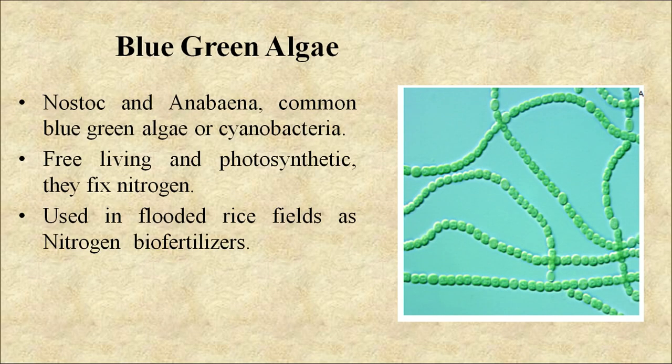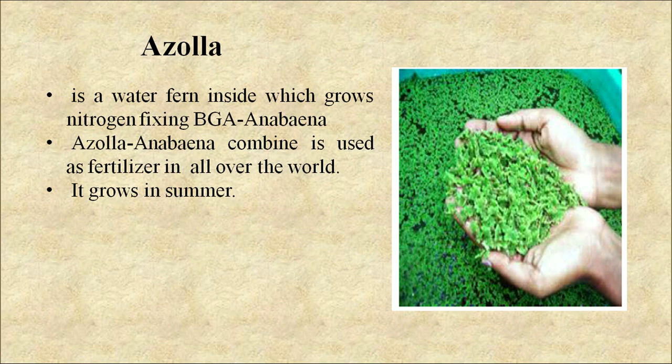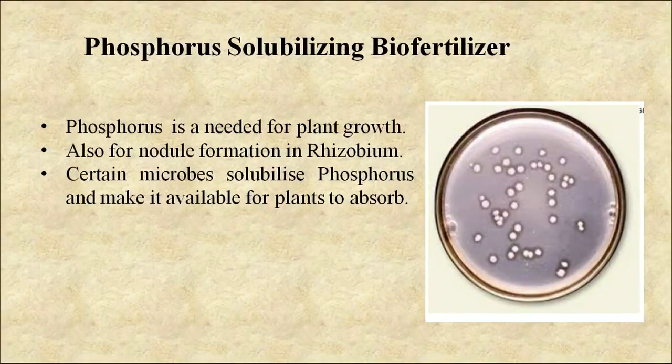Next is blue green algae. Nostoc and Anabaena are common blue green algae or cyanobacteria. They are free-living and photosynthetic. They fix nitrogen and are used in flooded rice fields as nitrogen biofertilizers. Next is azolla — it is a water fern inside which grows the nitrogen-fixing blue green algae Anabaena. Azolla-Anabaena combined is used as fertilizer all over the world and it grows in summer. Next is phosphorus-solubilizing biofertilizers. Phosphorus is needed for plant growth and also for nodule formation in rhizobium. Certain microbes solubilize phosphorus and make it available for plants to absorb.